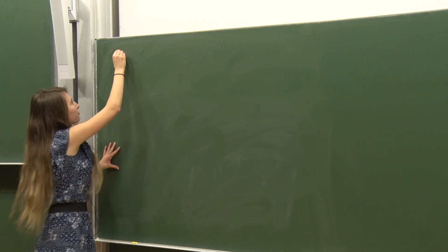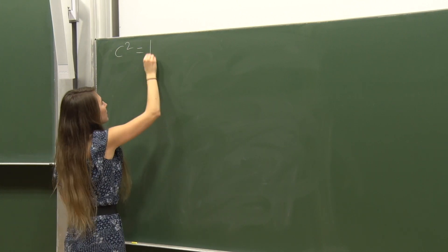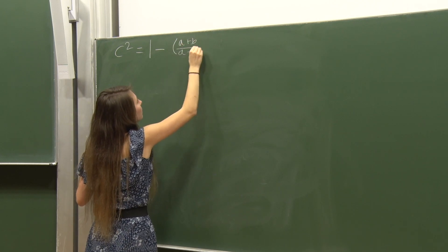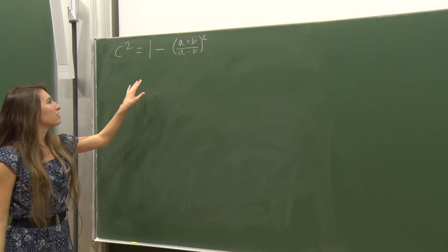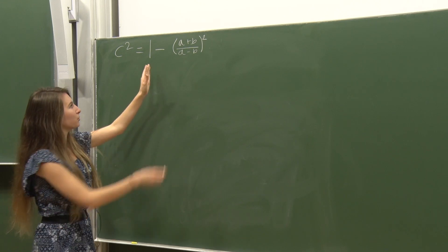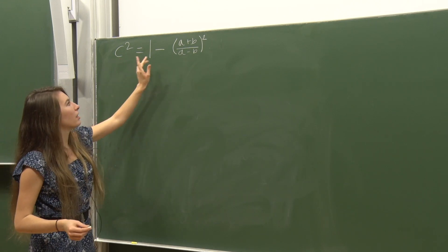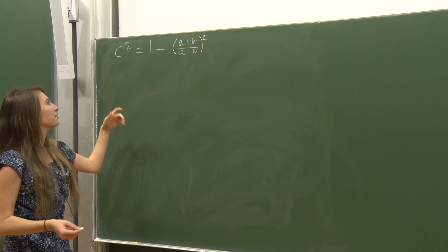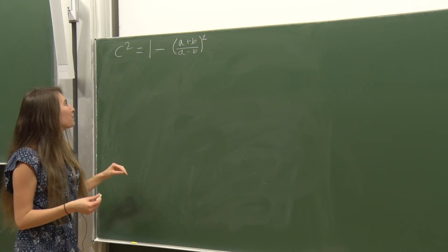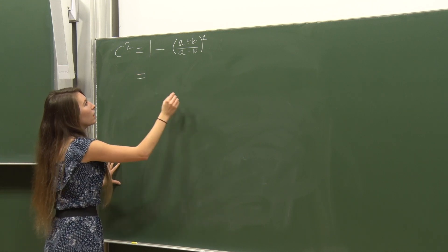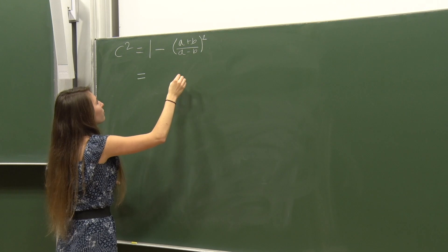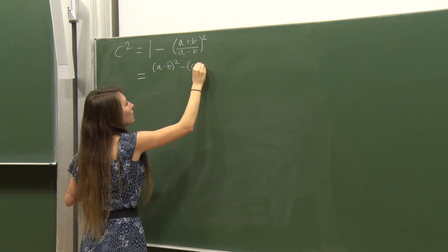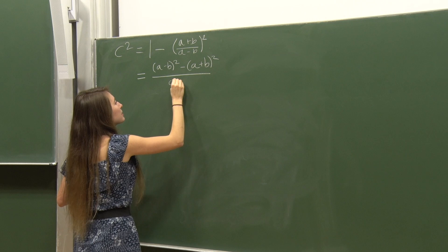Now we're asked to show that c² = -4ab/(a-b)² is equivalent to c² = 1 - [(a+b)/(a-b)]². Since that second form is expressed as a difference, I'll expand it: it equals [(a-b)² - (a+b)²] / (a-b)².